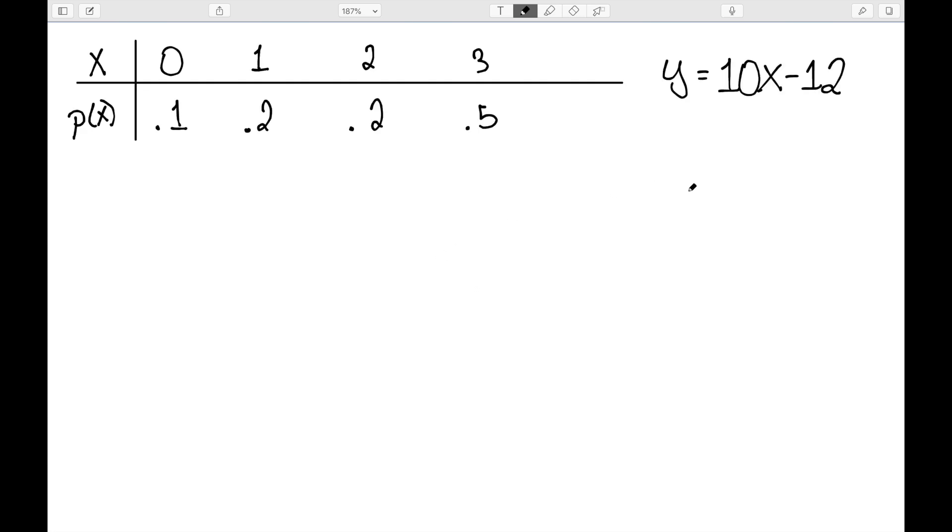Here I have a PMF for a discrete distribution, and let's suppose I also know that y is equal to 10x minus 12. I'm going to start by finding the variance of just this variable x. So I'm going to look at x squared p of x.